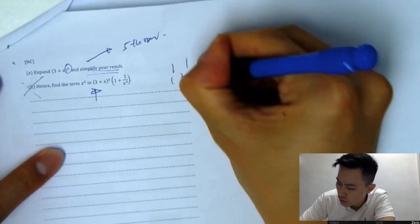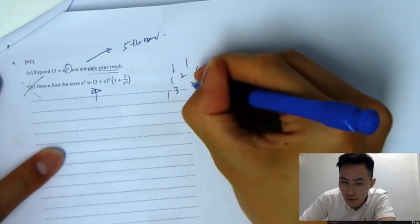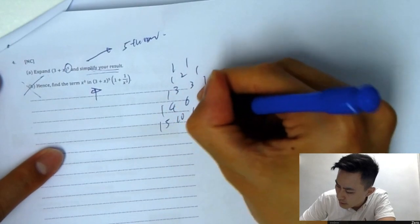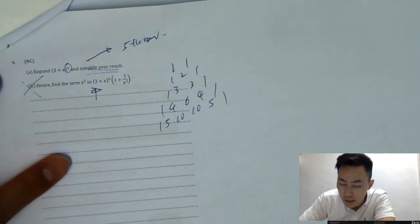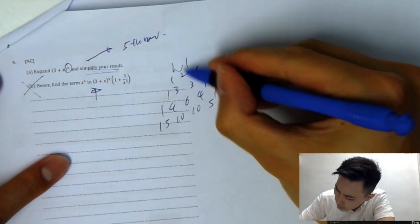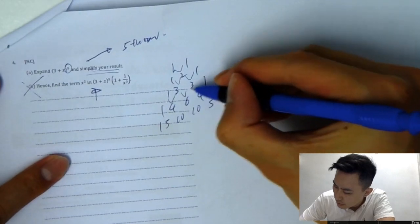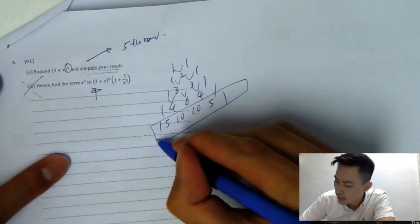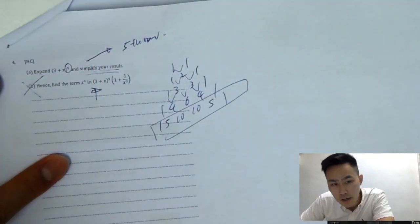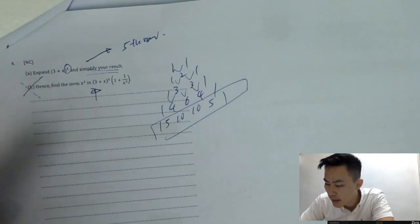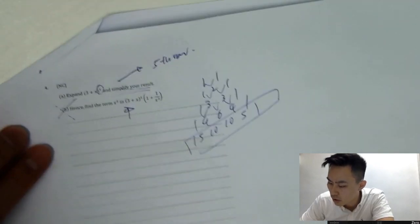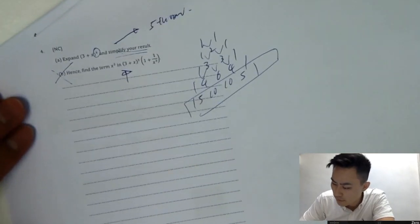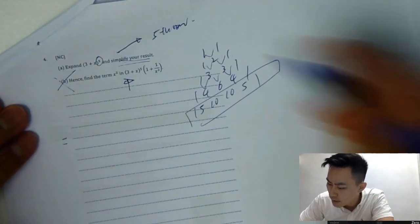For part A, since the power is 5, I'll expand Pascal's triangle to the fifth row: 1, 1 then 1, 2, 1 then 1, 3, 3, 1 then 1, 4, 6, 4, 1 and finally 1, 5, 10, 10, 5, 1. Because we just add two adjacent numbers up — you can see the pattern. So I get the coefficients from this fifth row.